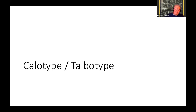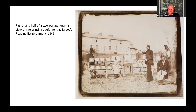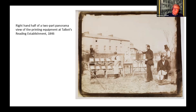The second process that Talbot invented was the calotype, also known as the Talbotype, based on being able to chemically develop out a latent image in the negative and then print from it. Photographic printing throughout the period was done using daylight out in the open area and simply contact printing. This is a view from 1846 — part of a two-part panorama of the Reading establishment that Talbot helped set up for his manservant Henneman to run. You can see the boy there looking at the frames, checking whether a print has formed.